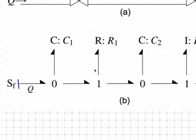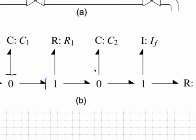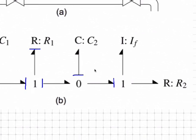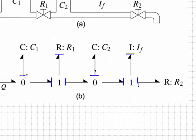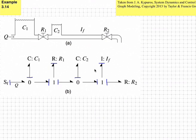We'll go to the energy storing elements — it doesn't matter which one we start with. If we start with the first C element and put it in integral causality, that will propagate out to the one junction. If we go to the next C element and apply integral causality, that will propagate to the one junction, the R element, and the other one junction on the right side. That just leaves the I element, which in integral causality will specify the flow at the remaining one junction.